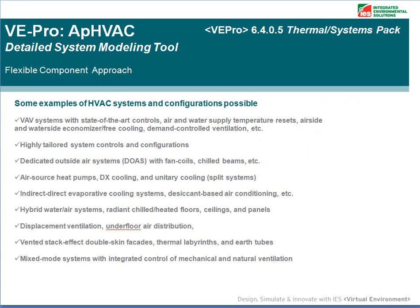Some examples of HVAC systems and configurations possible include: VAV systems with state-of-the-art controls; highly tailored systems, controls and configurations; dedicated outside air systems with fan coils and chilled beams; air source heat pumps; indirect direct evaporative cooling systems; hybrid hydronic air systems; displacement ventilation; vented stack effect double skin facades; thermal labyrinths and earth tubes; and mixed mode systems with integrated control of mechanical and natural ventilation.